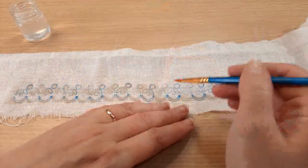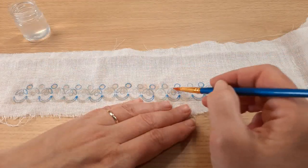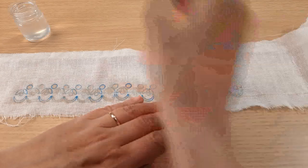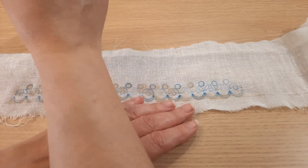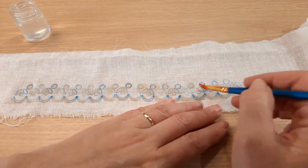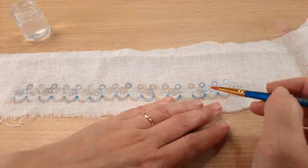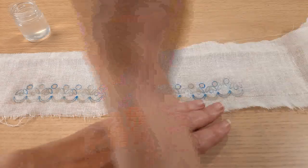So taking a leaf out of our ancestors books is not a bad idea sometimes I think you'll find. Now it does look, you can see it sort of looks like the ink has spread but it hasn't it's just wet so it's darker.